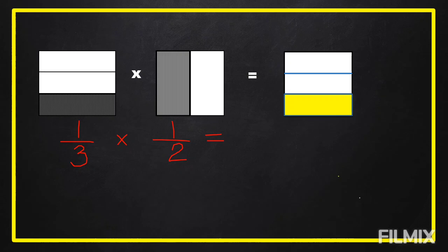And we are going to show also one-half. But this time, we are going to divide vertically into two equal parts. Then, we are going to shade one part.